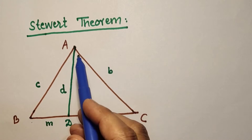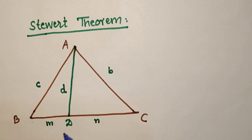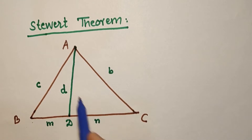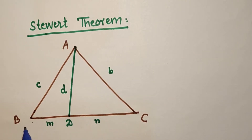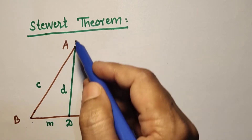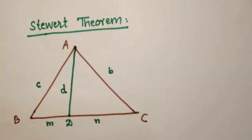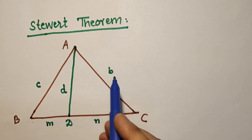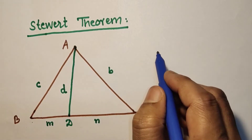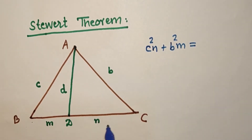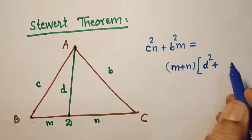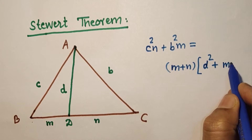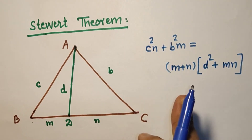For Stewart's theorem, in a triangle ABC, if AD is any line segment from vertex A to BC, then: AB has length c, AC has length b, BD is m, DC is n, BC is m plus n, and AD has length d. According to Stewart's theorem: b² × m + c² × n = BC × (d² + m × n). This is the well-known Stewart's theorem.